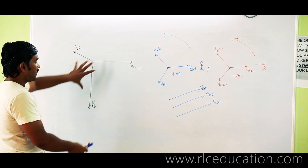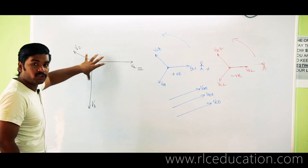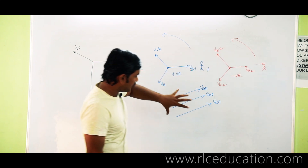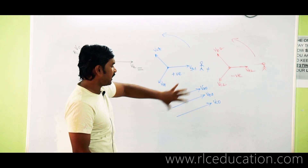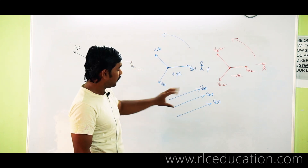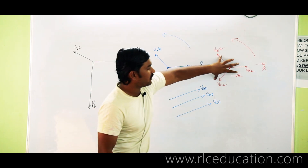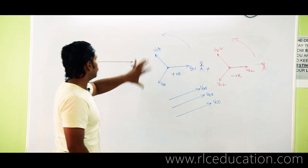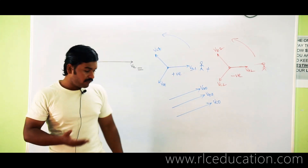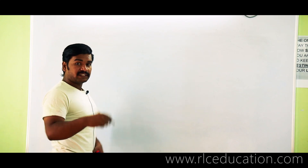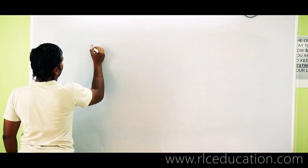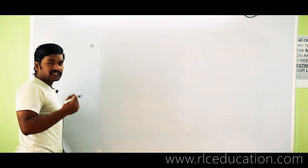Before writing these sequence components in mathematical form, we introduce an operator called alpha. Alpha is a complex operator. Just as j is used as a complex operator — where j equals 1 at angle 90 degrees, meaning it rotates a vector by 90 degrees anticlockwise — similarly, alpha is defined to rotate a vector by 120 degrees.